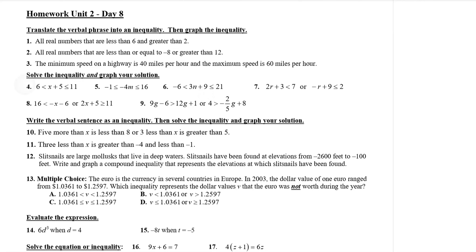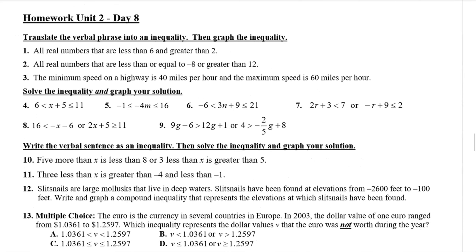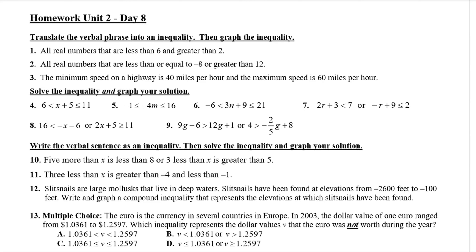So for number one, that's where I'm going to start. It says all real numbers that are less than 6 and greater than 2. So when we're saying all real numbers, we are going to assign a variable to that. All real numbers, we're just going to call that x. So x has to be less than 6 and greater than 2. Now technically you could write this as two separate inequalities and then just write 'and' in between them, but there's a proper way to actually write this — it's kind of one big inequality all squished together.